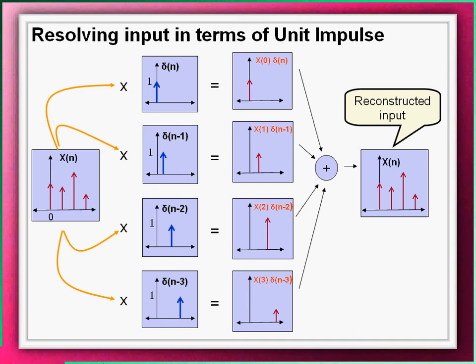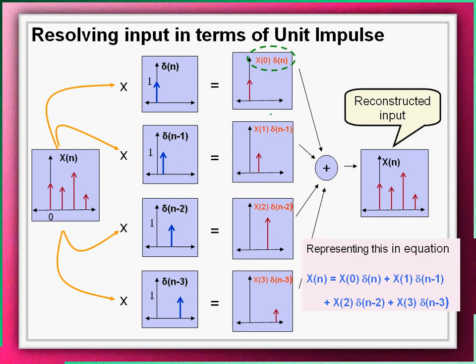Adding all these samples we obtain the original reconstructed input X(n). This means we have resolved the input correctly. This process can be mathematically expressed by an equation as shown, which is obtained by adding all the product values.